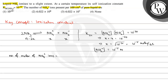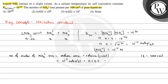The number of moles of NH4+ ions equals molar concentration multiplied by volume in liters. The molar concentration is 10 raised to the power minus 15 moles per liter. The volume is 100 centimeter cube, which is 0.1 liter because 1 liter equals 1000 centimeter cube. So this gives 10 raised to the power minus 16 moles.